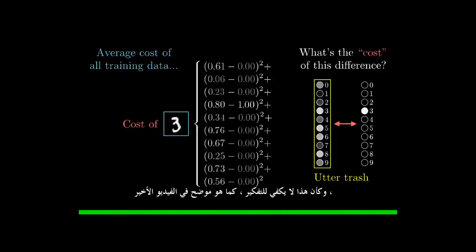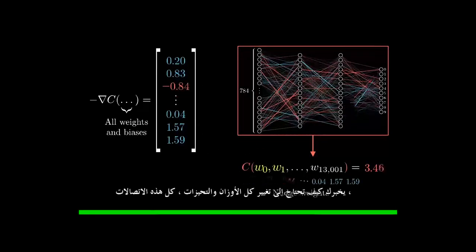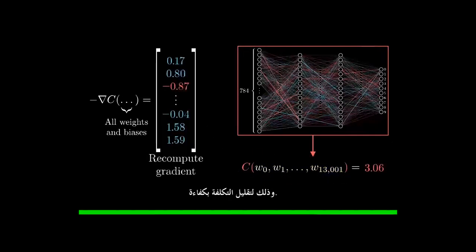And as if that's not enough to think about, as described in the last video, the thing we're looking for is the negative gradient of this cost function, which tells you how you need to change all of the weights and biases, all of these connections, so as to most efficiently decrease the cost.